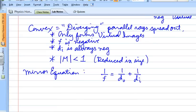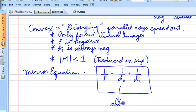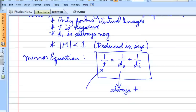And the key to using this equation effectively is knowing when f is positive or negative and when di is positive or negative. Now the one trick is that the object distance is always positive. Okay, and f is positive for concave and negative for convex. Okay?